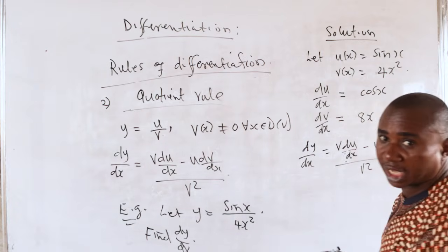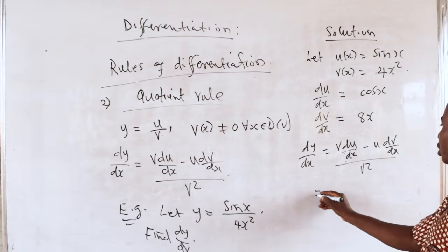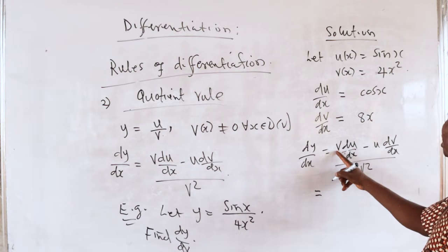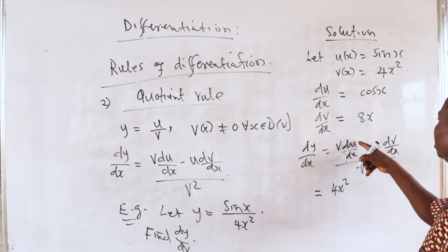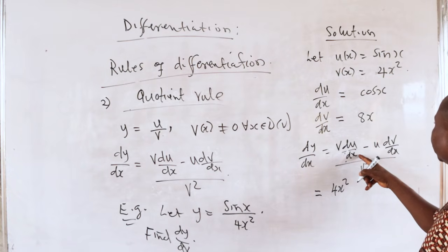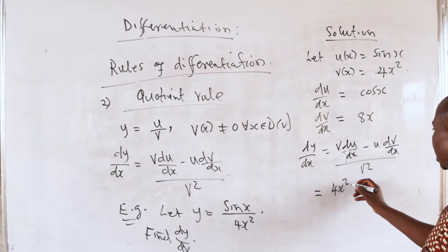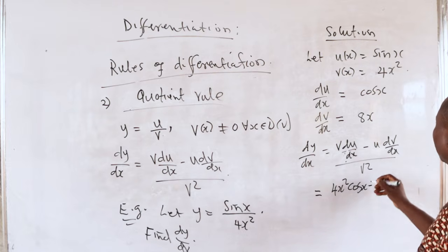we know dv, so we apply. Once we substitute them, our v is 4x², du/dx is cos x, minus,